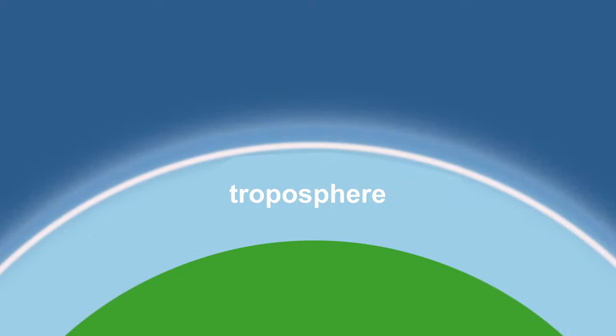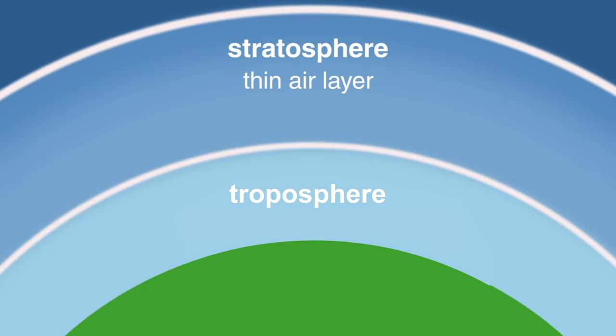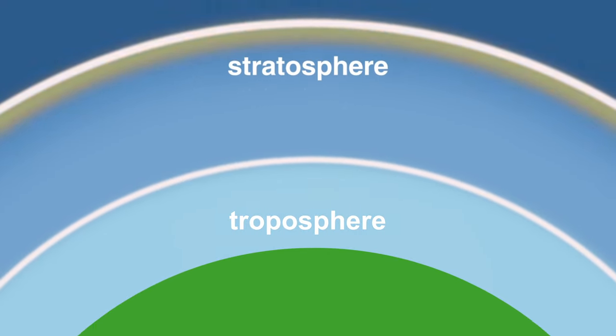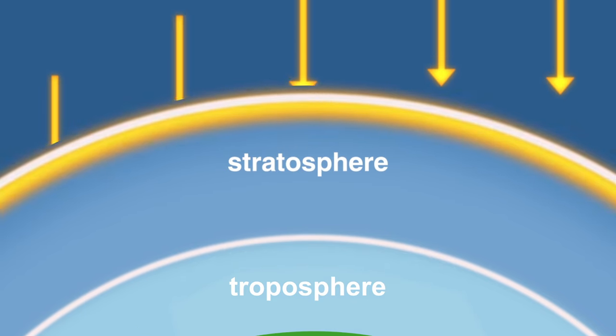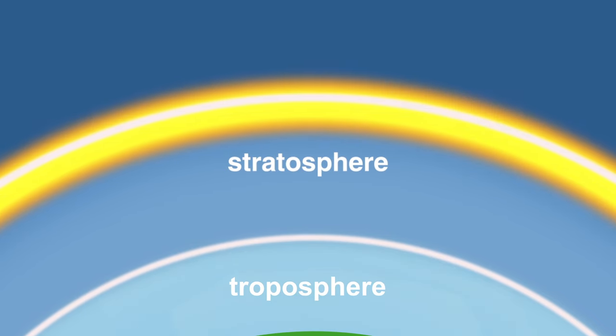Above the tropopause we have the stratosphere. This is a layer of thin air which is hot on top because it's heated from above by ultraviolet radiation absorbed by the good ozone and cold underneath making it dynamically stable. Contrast this with the turbulent troposphere.